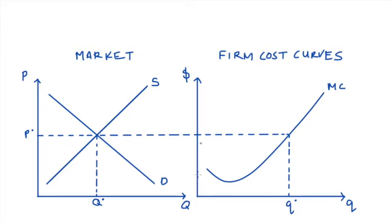On the right-hand side, we have the marginal cost curve for a characteristic firm in our market. I've only included marginal cost here because that's all I need, though it is common with our cost curves to see average variable cost and average total cost in these sorts of diagrams too.